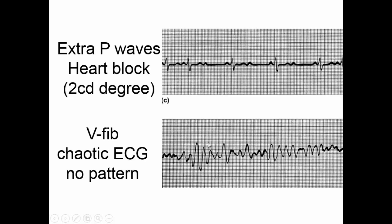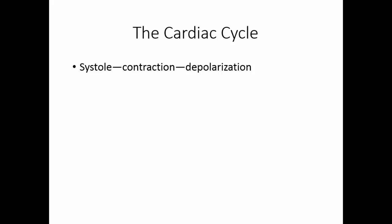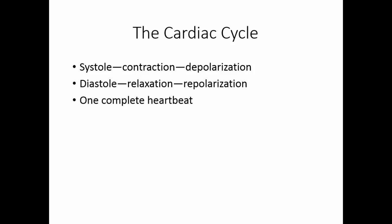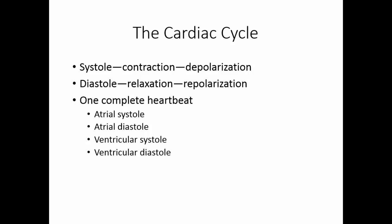A cardiac cycle is one complete beat of the heart. Systole has the same meaning as contraction or depolarization, and diastole has the same meaning as relaxation or repolarization. So one complete heartbeat or cardiac cycle consists of atrial systole, atrial diastole, ventricular systole, and ventricular diastole — in other words, the atria contract and relax, and then the ventricles contract and relax.